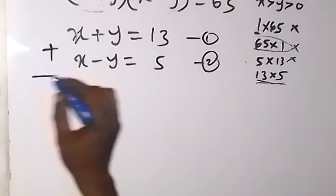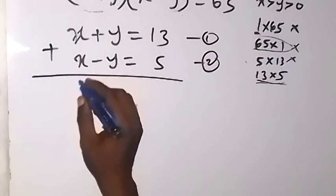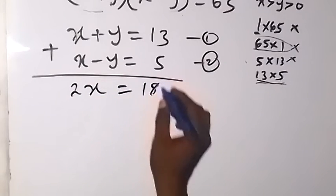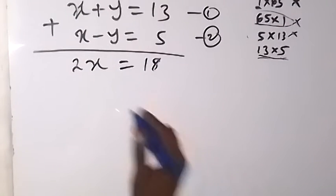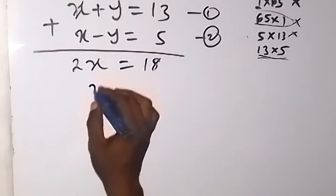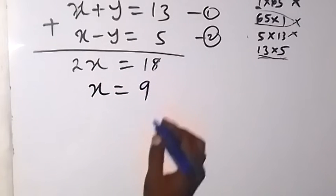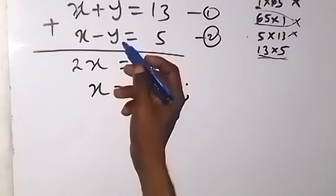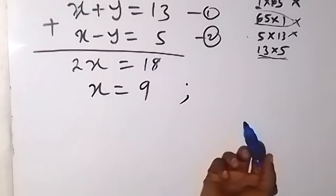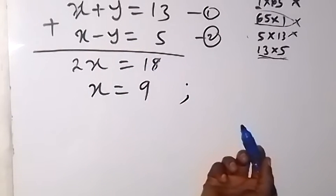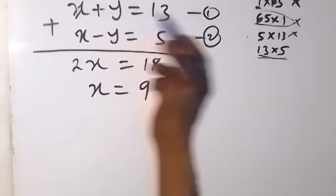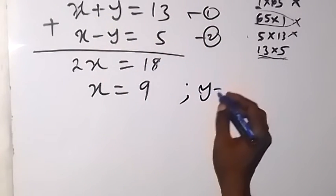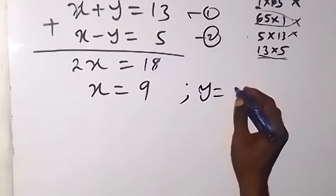By adding the two equations, the y terms cancel and we get 2x equals 18. Dividing both sides by 2, x equals 9. We can then find y by substituting x equals 9 into equation 1: y equals 13 minus 9, which gives y equals 4. So x is 9 and y is 4.